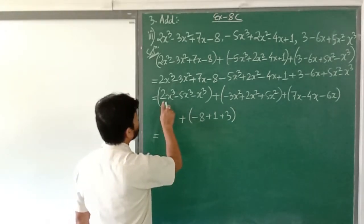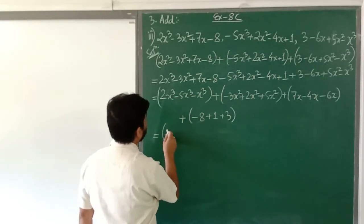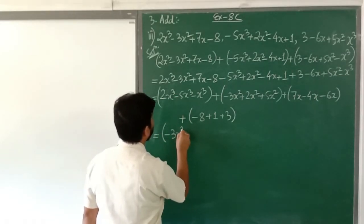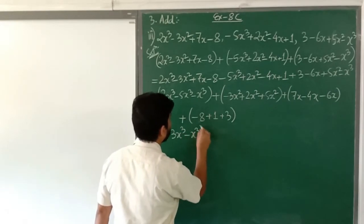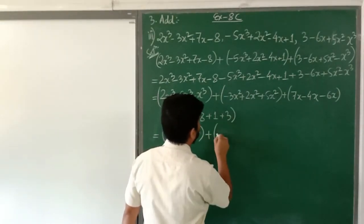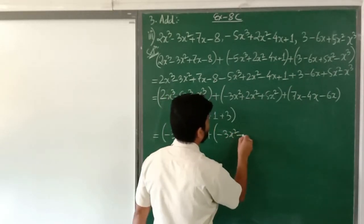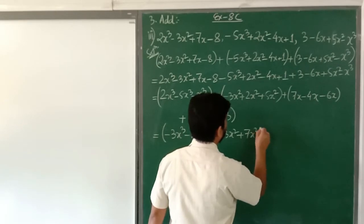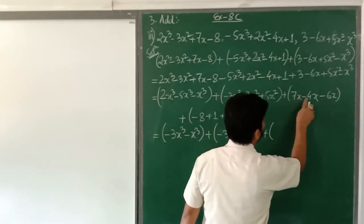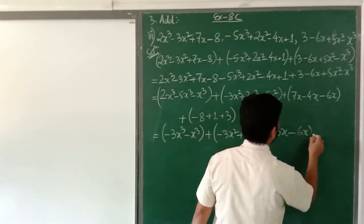Now computing: 2 minus 5 is minus 3x³, and minus x³ gives us the x³ group. For x²: minus 3 plus 2 plus 5 is plus 4, so 4x² minus 3x². For x: 7 minus 4 is 3x, minus 6x.